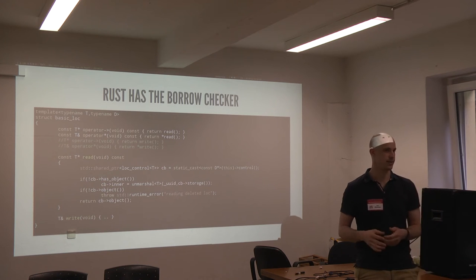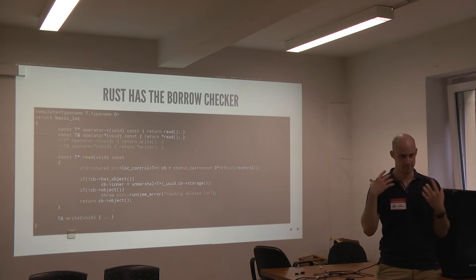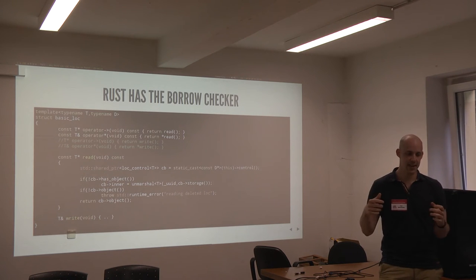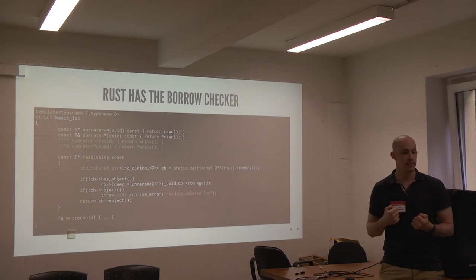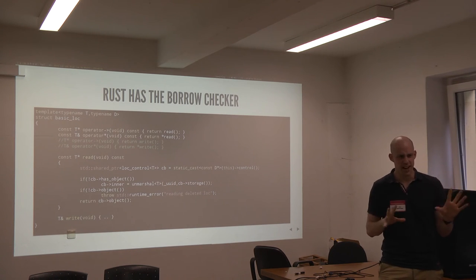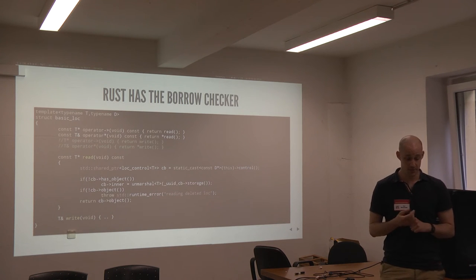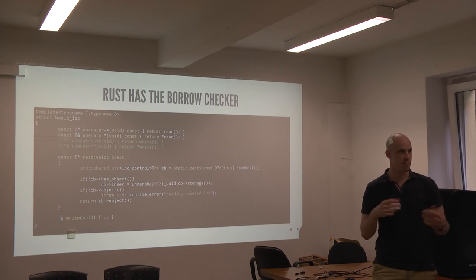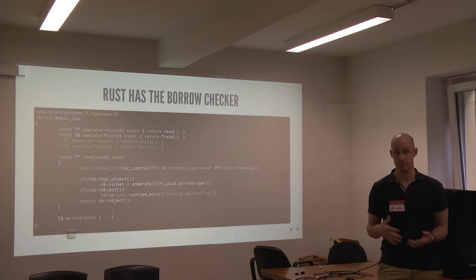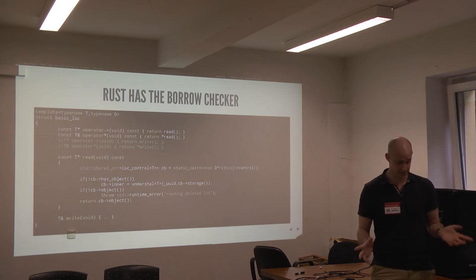At one point I implemented the borrow checker in Panopticon without knowing it — runtime checked and not well designed. I had the problem that the program was more or less a front-end for a database. You pull a value out, work on it, and write it back. While working on it, you need to lock that value so another thread doesn't modify it. I built a wildly hard-to-understand smart pointer to do that, but I commented out the write function because I never got it correct. When I came to Rust, I realized I had been building a runtime borrow checker.